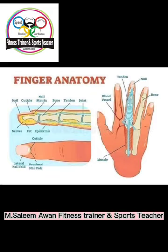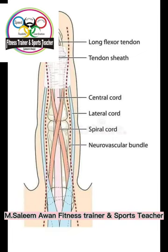Regarding ossification of the carpal bones — all these bones are cartilaginous at birth. Each carpal bone ossifies by one centre, and all the centres appear after birth, so there are no primary centres for carpal bones. The capitate is the first bone to ossify, and the pisiform is the last bone to ossify among the carpal bones.